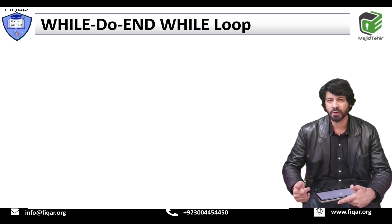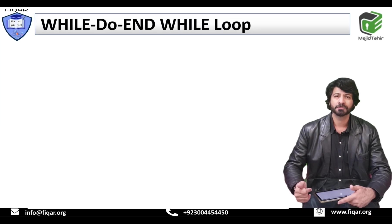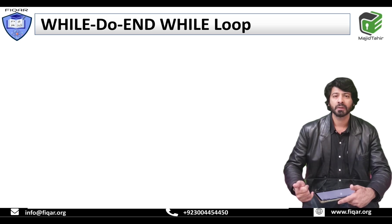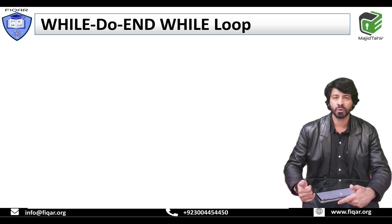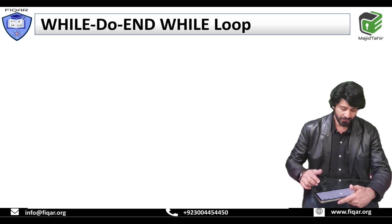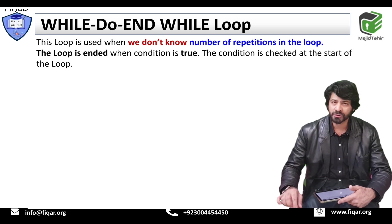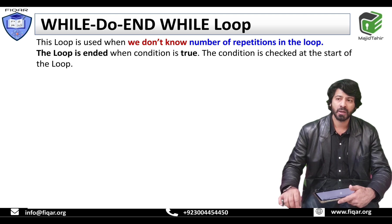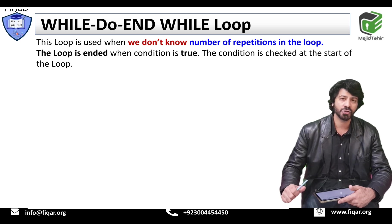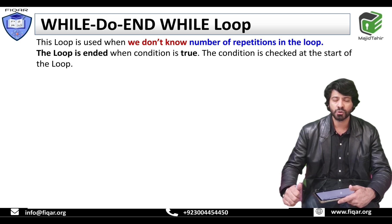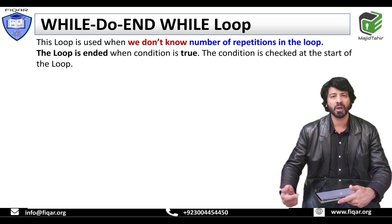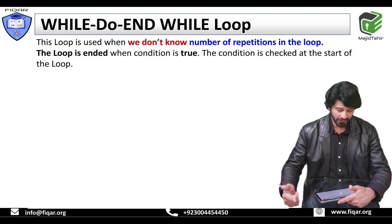Next, we are going to talk about another loop which is called the precondition loop. We also call it while-do and while. This loop is used when there is a certain condition. In this loop, we do not know how many times the loop is going to be repeated.